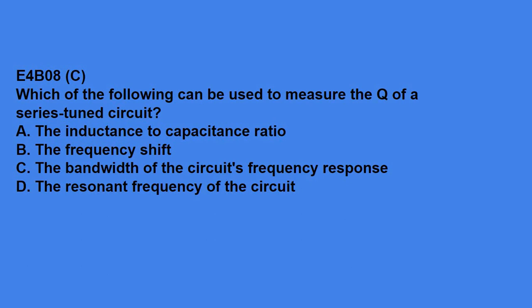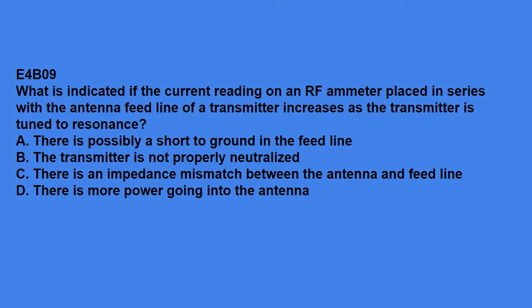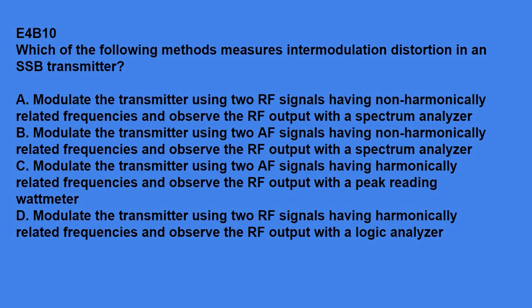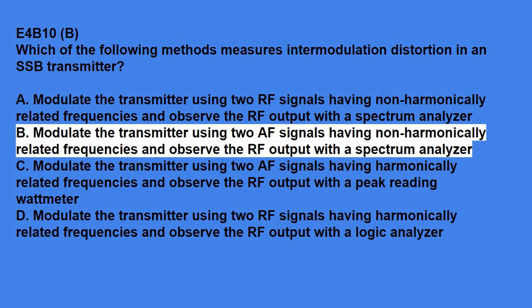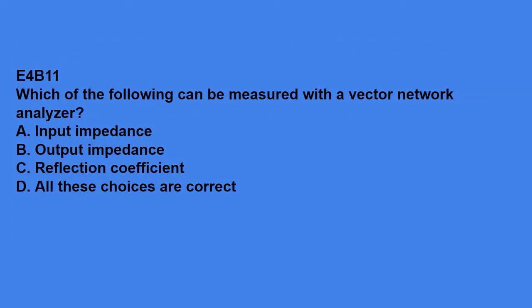E7B08, which of the following can be used to measure Q of a series-tuned circuit? Answer is C, the bandwidth of the circuit's frequency response. E4B09, what is indicated if the current reading of an RF ammeter placed in series with the antenna feed line of a transmitter increases as the transmitter is tuned to resonance? Answer is, there is more power going into the antenna. E4B10, which of the following methods measures intermodulation distortion in an SSB transmitter? Correct answer here is, modulate the transmitter using two AF signals having non-harmonically related frequencies and observe the RF output with a spectrum analyzer. E4B11, which of the following can be measured with the vector network analyzer? Answer is, all of these choices are correct. So, input impedance, output impedance, and reflection coefficient.